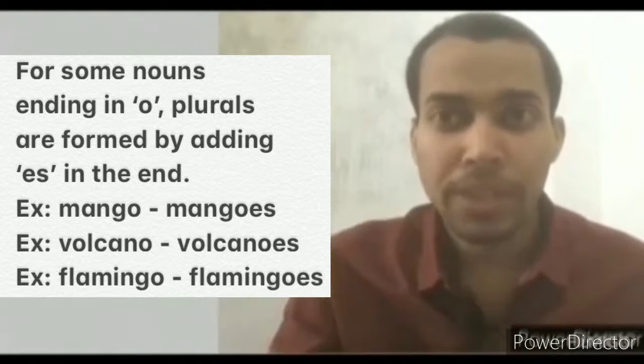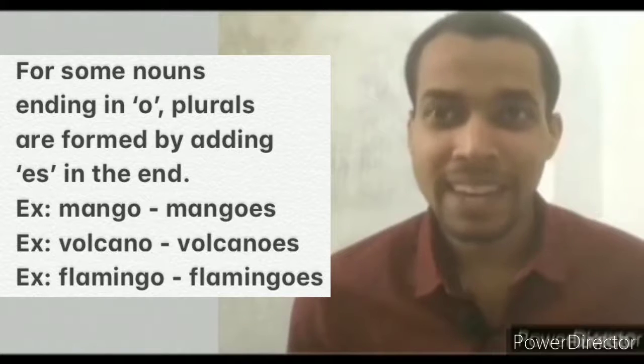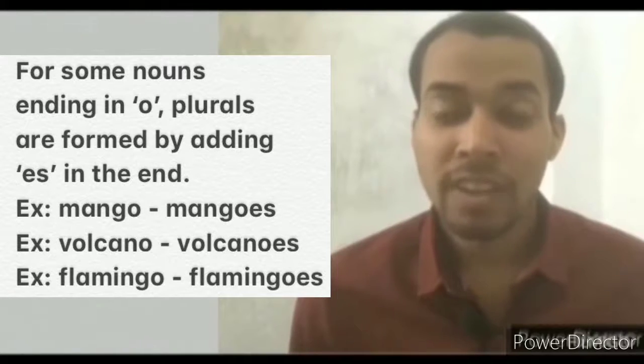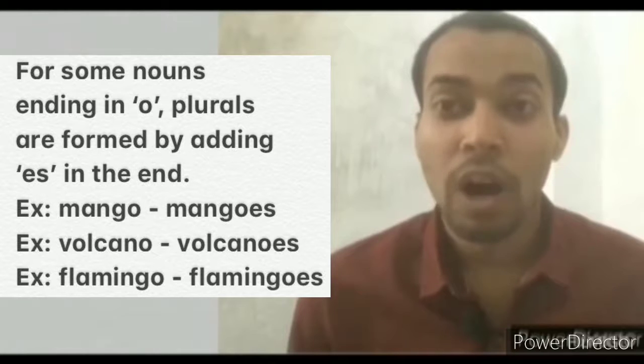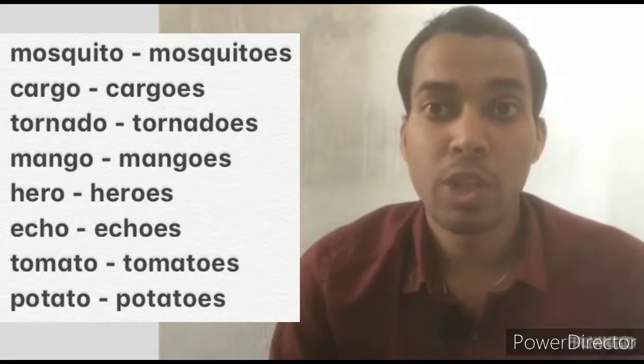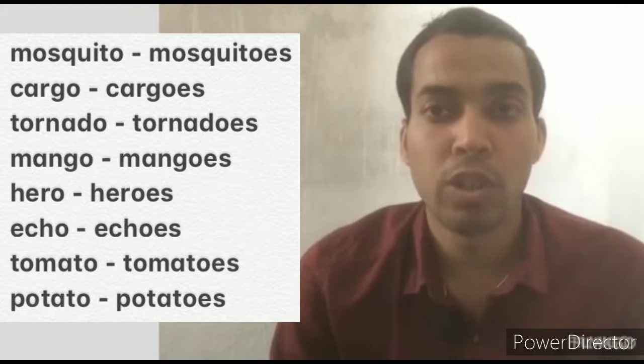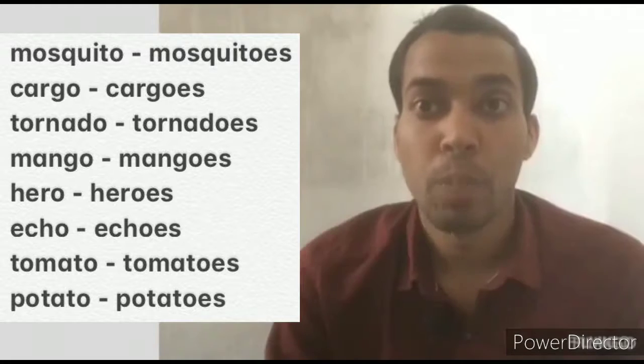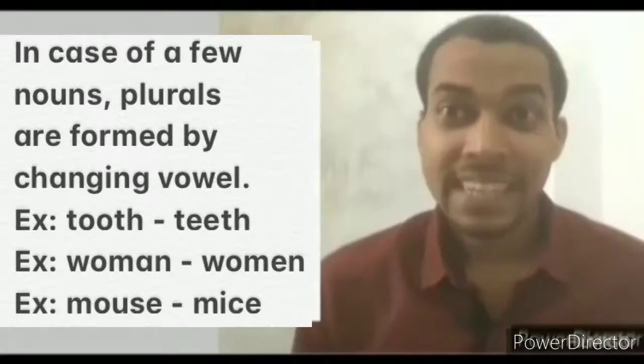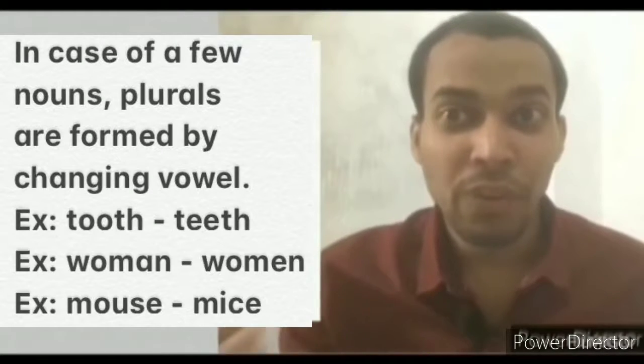For some nouns ending in O, plurals are formed by adding ES in the end. For example, mango - mangoes, volcano - volcanoes, flamingo - flamingoes, mosquito - mosquitoes, cargo - cargoes, tornado - tornadoes, hero - heroes, echo - echoes, tomato - tomatoes, potato - potatoes.